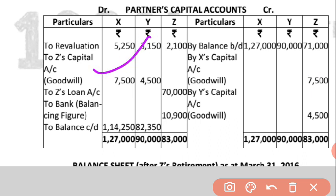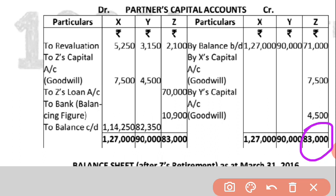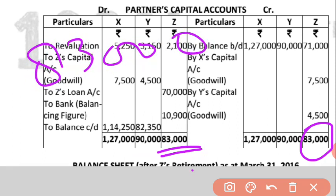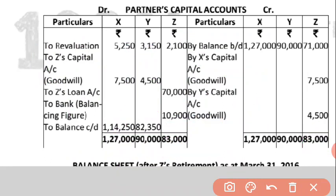Now transfer the revaluation loss in the old ratio 5:3:2 — X gets 5,250, Y gets 3,150, Z gets 2,100. As per the question, 70,000 is transferred to Z's loan account, so write 'To Z Loan Account 70,000' in Z's column. Summing up Z's column: credit side is 83,000 and debit side is 72,100, so the difference of 10,900 is paid by cheque to bank.